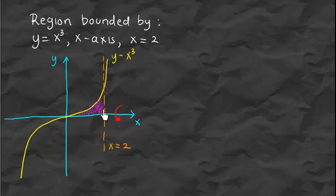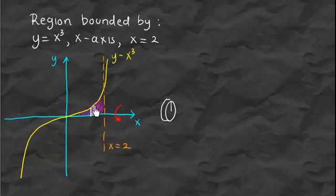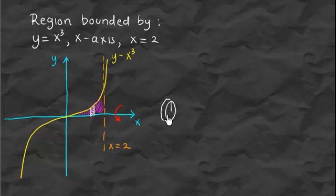To understand this better, we take a vertical slice of the region. Imagine that we rotate that white slice around the x-axis — we get a cylindrical object. To find the volume of the resulting object after we revolve this region about the x-axis, we need to understand how to compute the volume of this small cylinder.